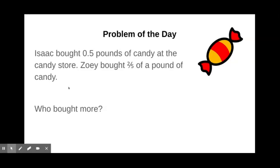Alright, let's check your work. We know that Isaac has 5 tenths pounds of candy. Now that's written as a decimal, whereas Zoe's is written as a fraction. It's really difficult to compare fractions versus decimals, so why don't we take this decimal and turn it back into a fraction?